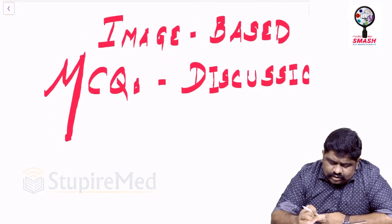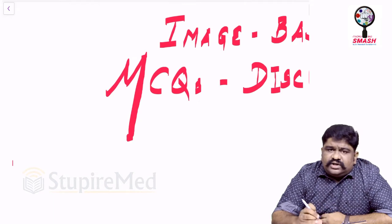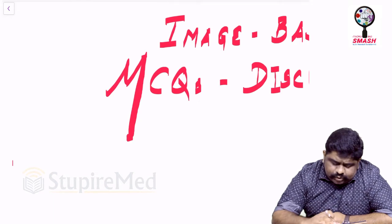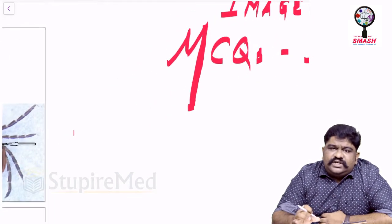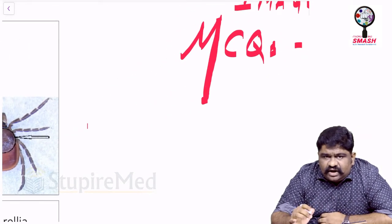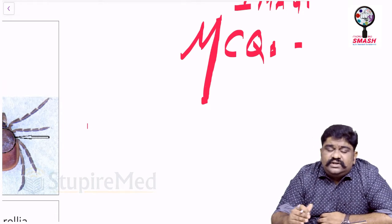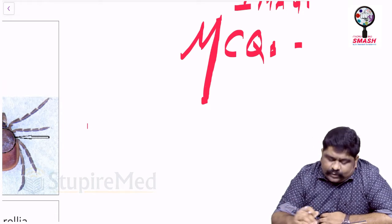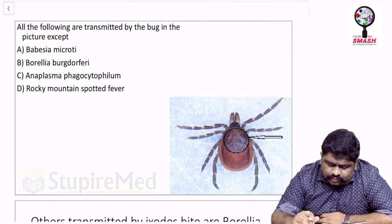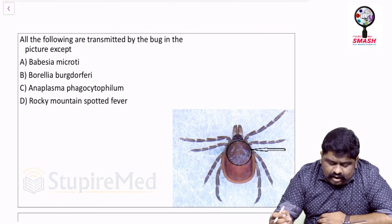Let's look at the first question. Do not jump to conclusions with any answer, because every question has been framed with high standards. First understand the picture, then understand the question, then link them together. The question: 'All the following are transmitted by the bug in the picture EXCEPT.'